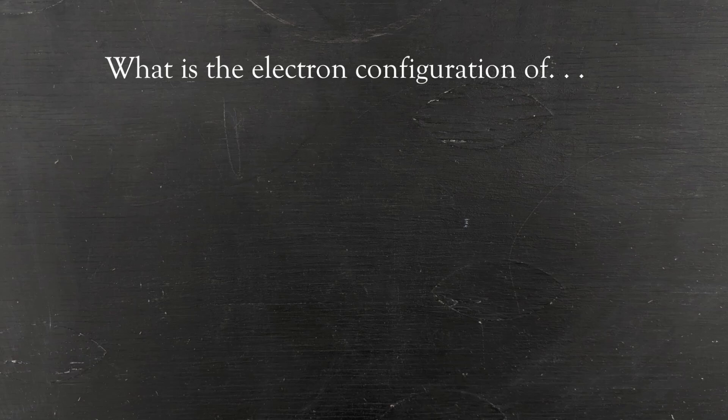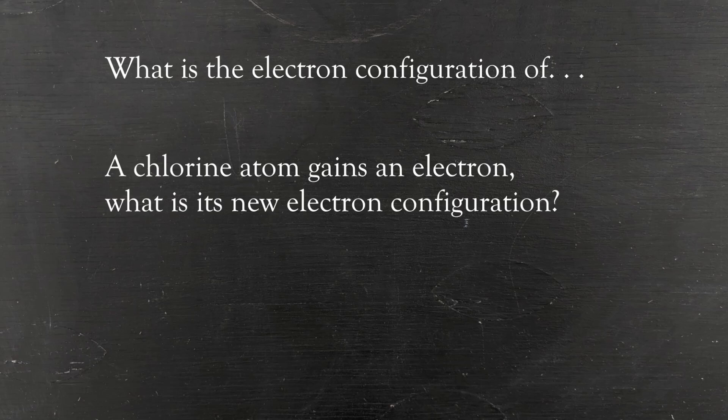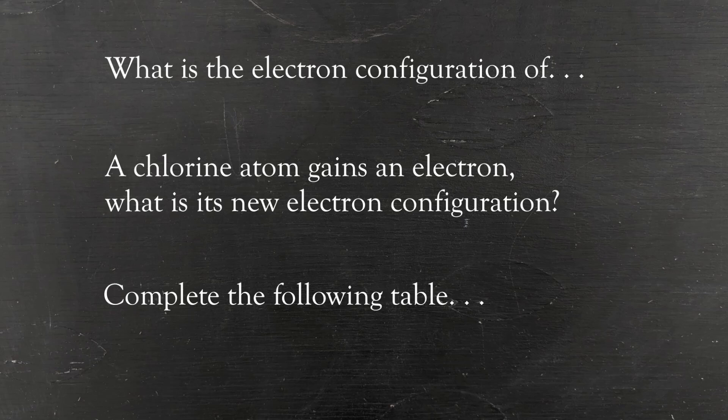Good afternoon and welcome to Hand Wavy Chemistry, where we do not delight in the details but rather bask in the big picture. Today it's problem time, where we answer chemistry-related questions. The question for today is: how do you write an electron configuration? We're going to start with some simple examples and slowly get more complicated, ending with the types of questions that most commonly trip people up. There are three styles of question we're going to be looking at today.